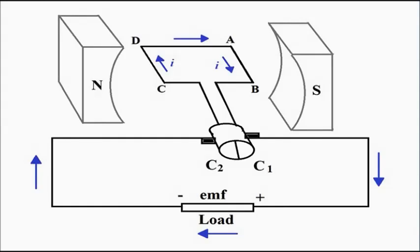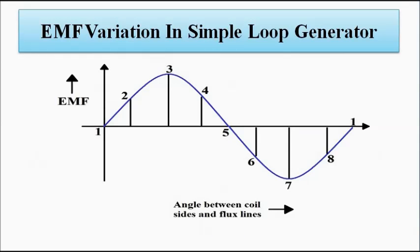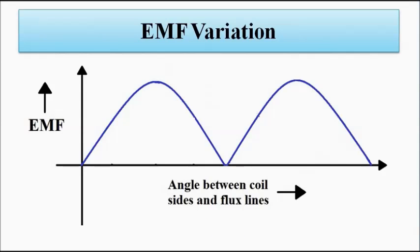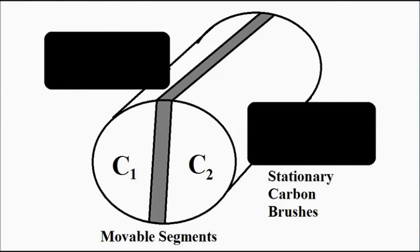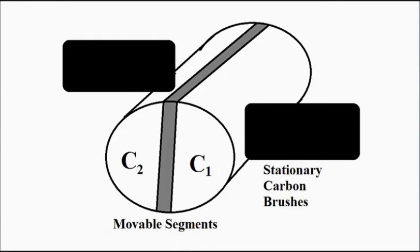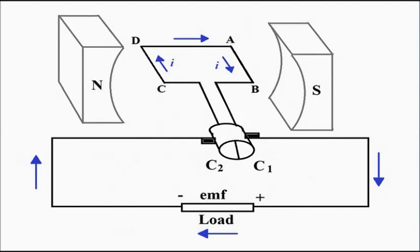So the AC gets converted into DC — that is the role of the commutator. The key principle is fixed brushes and movable segments of the cylinder. This is how we get a DC output voltage. I hope you liked this video — please subscribe to Engineering Tutorial for more videos related to electrical, electronics, instrumentation, and communication engineering. Thank you very much.